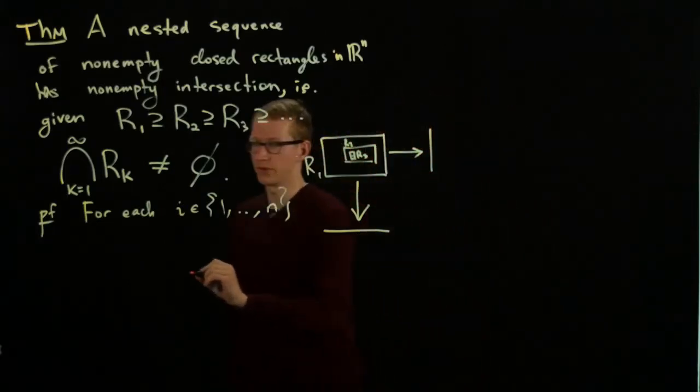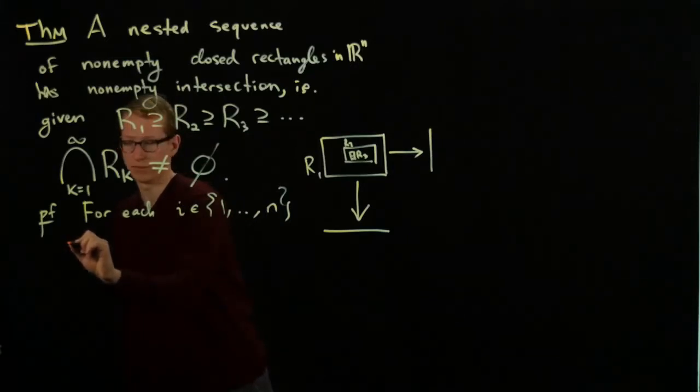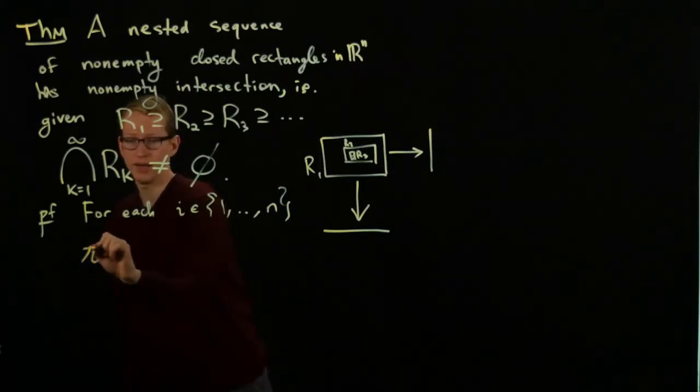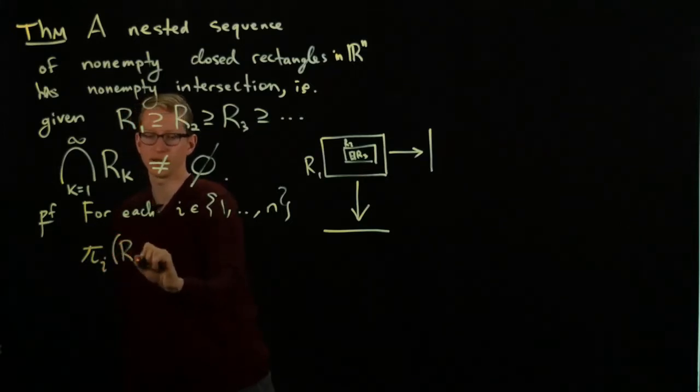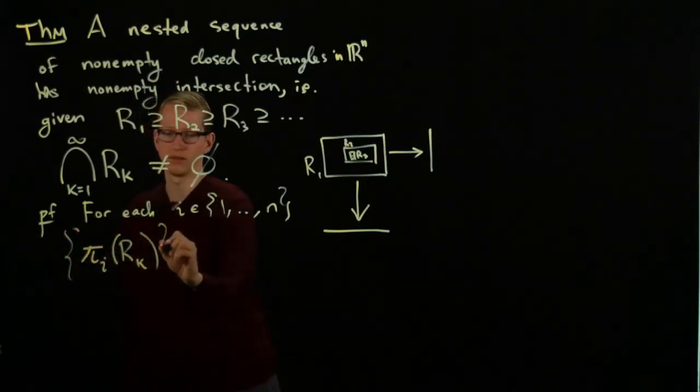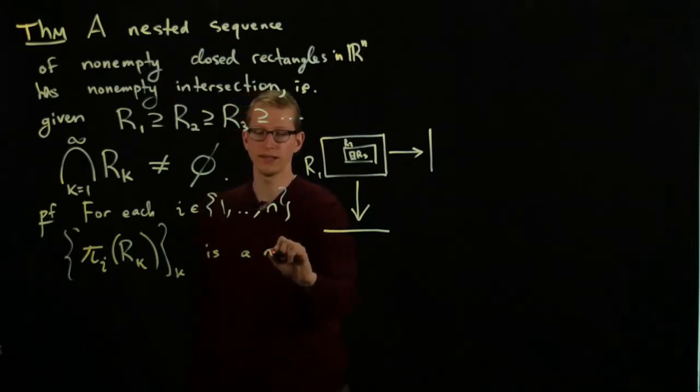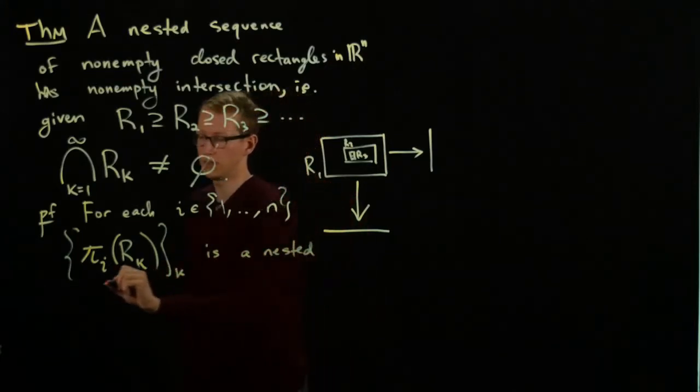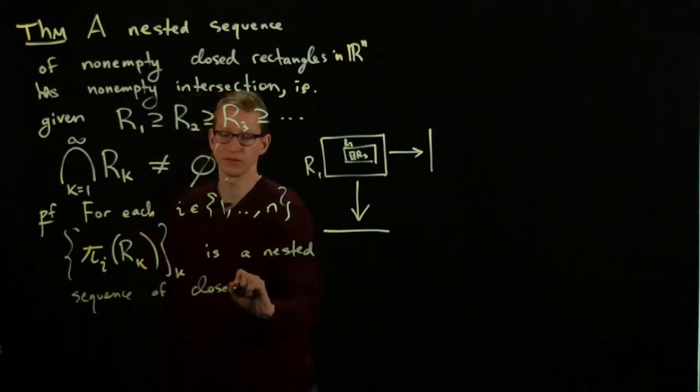So for each i, we set πi, the projection onto the i-th coordinate of each of these rectangles Rk. The set of all of these k is a nested sequence of closed intervals.